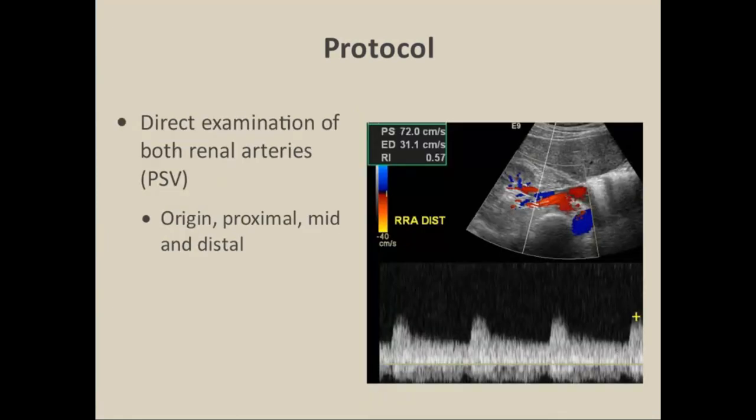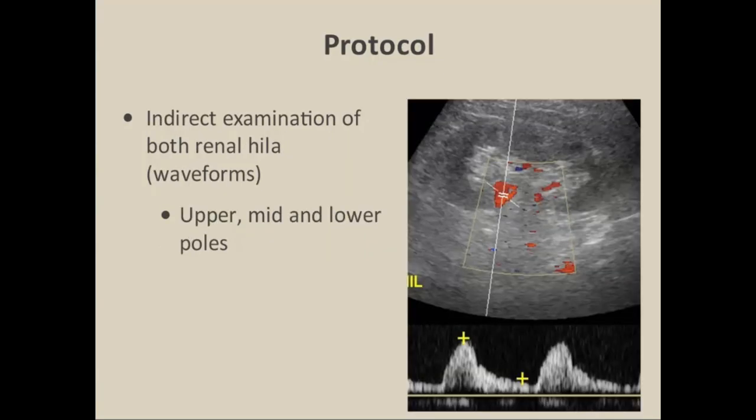The direct examination obtains peak systolic velocities at multiple locations. With atherosclerosis, you would expect stenosis near the origin or proximal segments of each renal artery. If the patient has underlying FMD, you'd focus more on the mid and distal portions. So in younger patients with progressive hypertension, make sure you get a good look at the entire renal artery. For the indirect exam, sample within the hilum of the kidney, focusing on the segmental branches at the upper, mid, and lower pole regions.